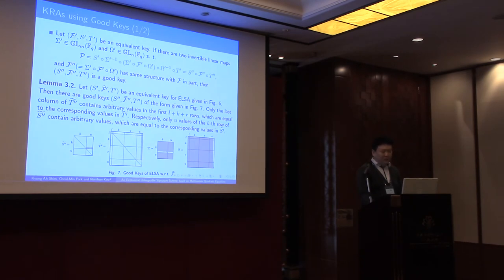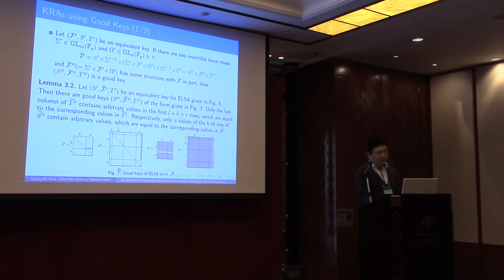For this equivalent key, there are two invertible linear maps, sigma-prime and omega-prime, satisfying this equation. And F-prime has the same structure with F in part, then we call this a good key. For central map F-hat, we can find this good key. And we can find good key for central map F and F-bar.